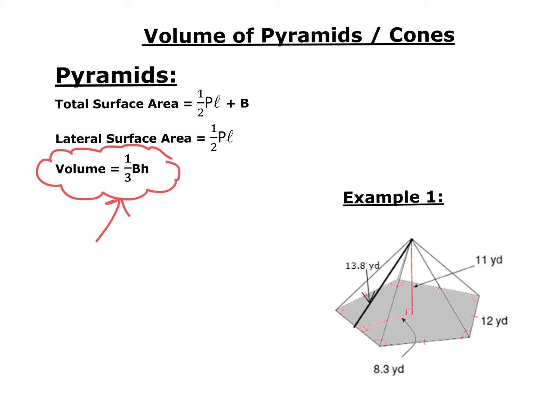So we want to find the volume, which is one-third the base area times the height. I need to know what kind of shape I have. So this is a five-sided regular polygon.